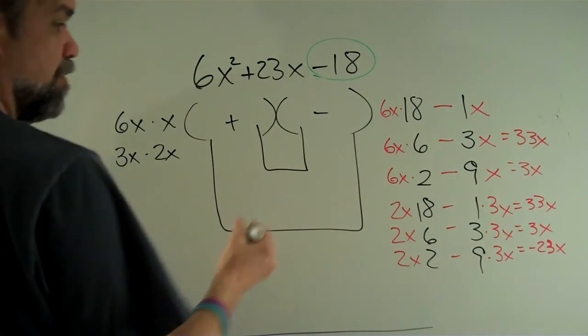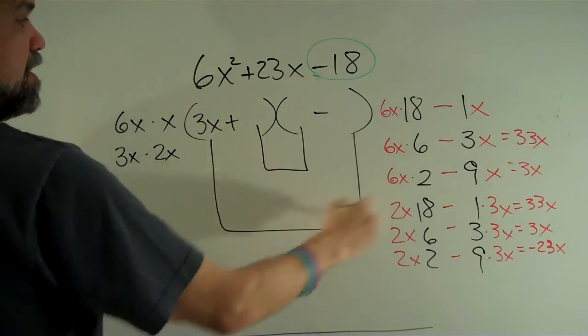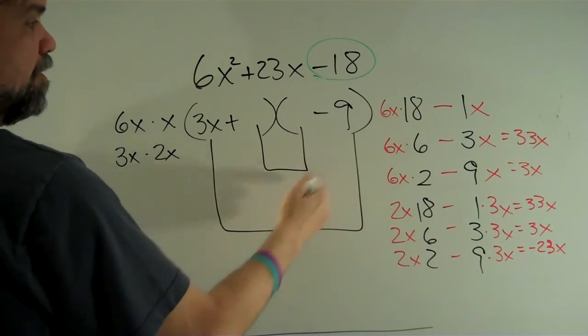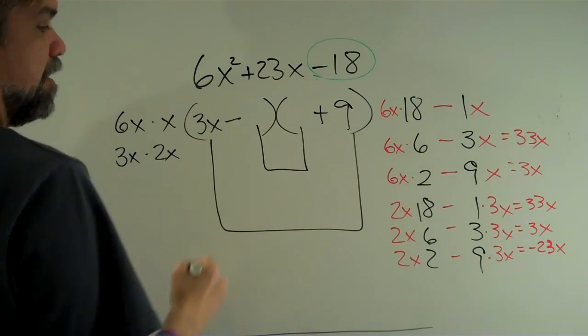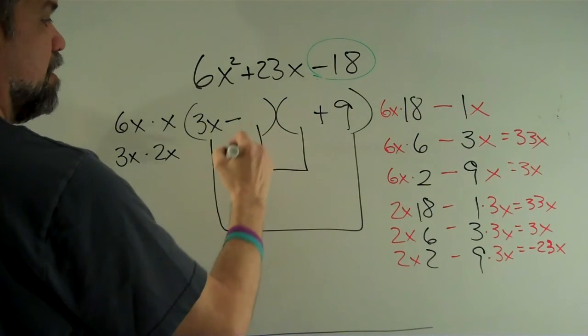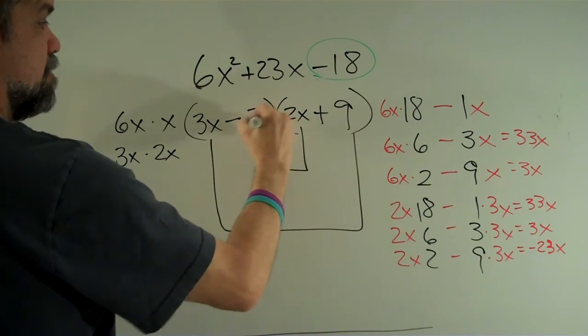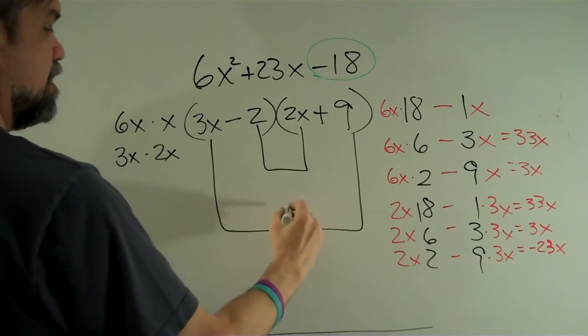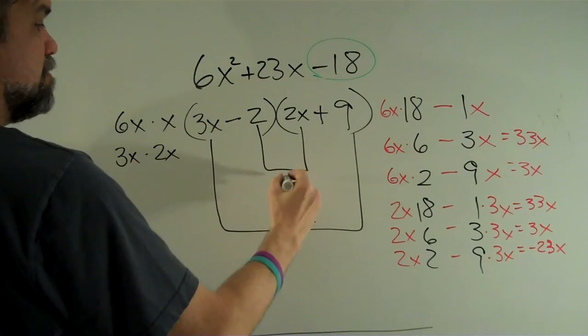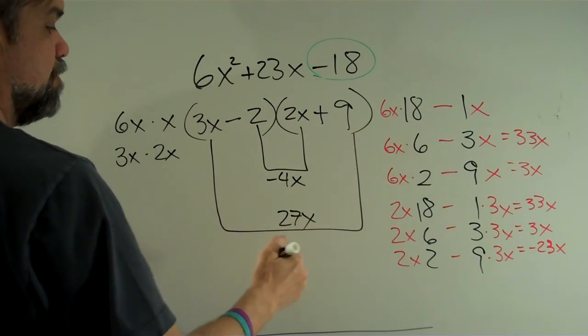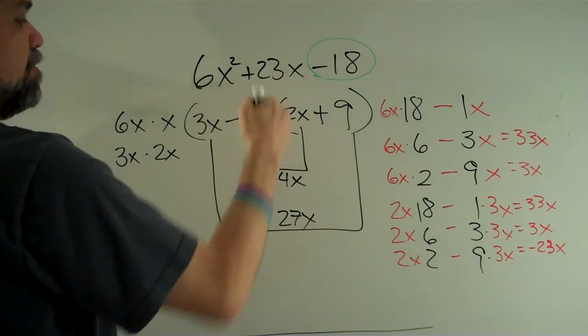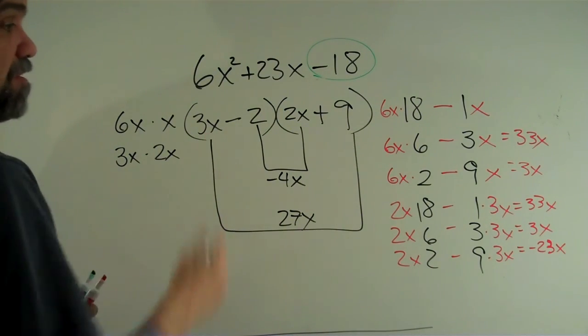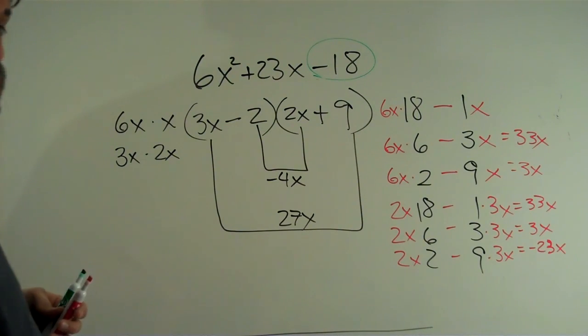So let's put that in there. We're going to do 3x times 9. And oh, and we said that's going to be the positive one. And we're going to subtract 2x times 2 from that. So let's see if this works. 3x times 9 is 27x. And negative 2 times 2x is minus 4x. 27x minus 4x is 23x. Yes, it works. That was really messy. But as you see, we got it done. And it didn't take too long.